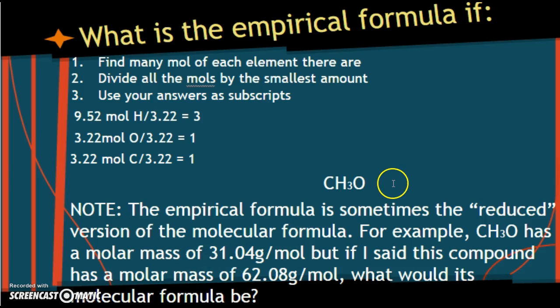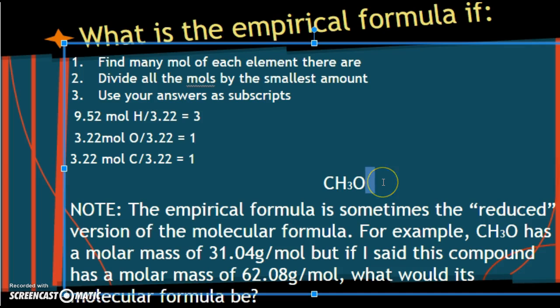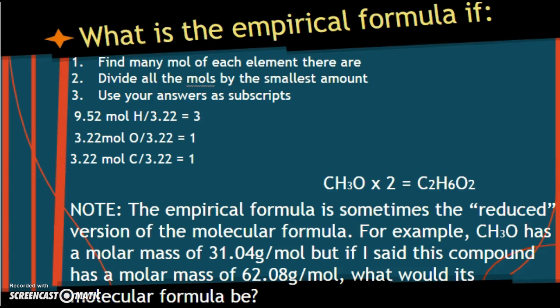I knew that because what I did was I took 62.08 divided by 31.04 equals 2. So it's twice as big. If we doubled all of this, what would we get for an answer? C2H6O2.